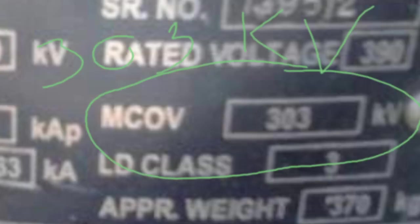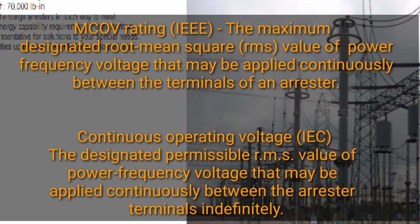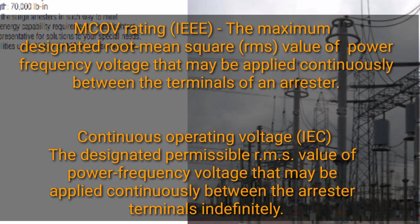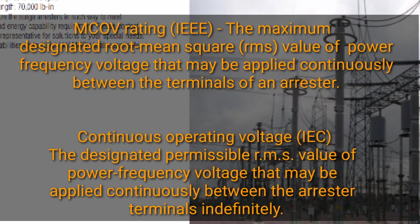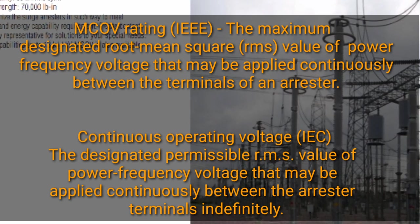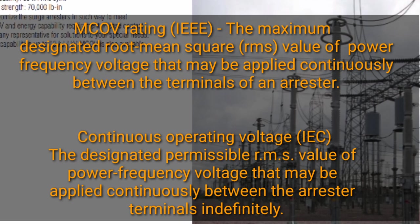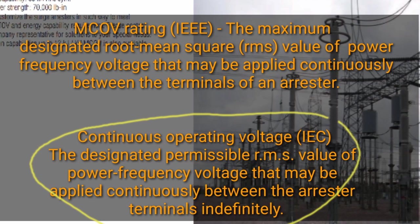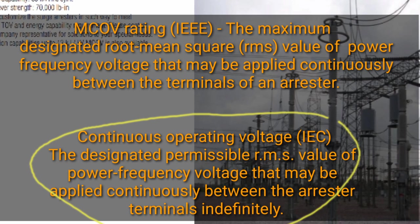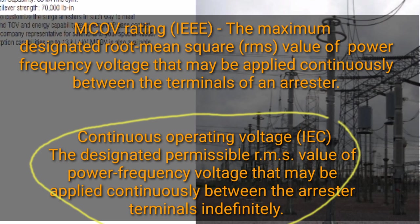Now MCOV stands for maximum continuous operating voltage, which is 303 kilovolts. MCOV rating as per IEEE — Institute of Electrical and Electronics Engineers — is the maximum designated RMS value of power frequency voltage that may be applied continuously between the arrestor terminals. Continuous operating voltage is that designated permissible RMS value of power frequency voltage that may be applied continuously between the arrestor terminals indefinitely.